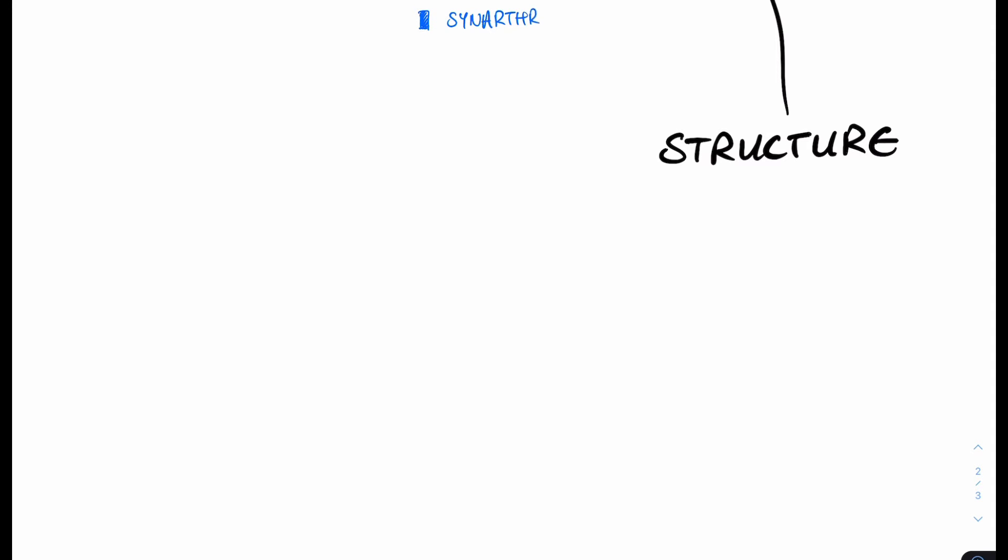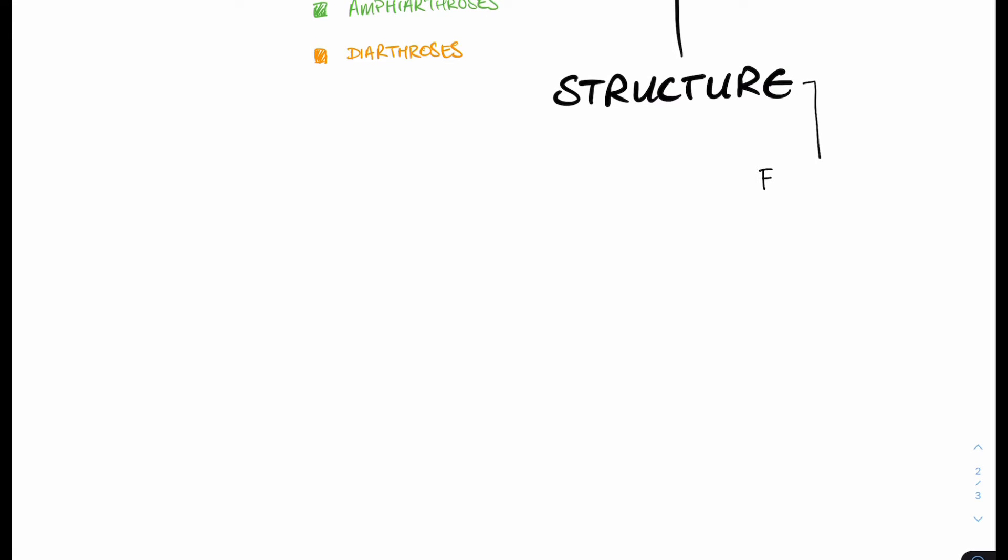The next type of joint classification is based on structure. I'm just going to quickly draw a color key whereby blue means that those joints are synarthrotic, no movement; green, amphiarthrotic, slight movement; and orange, diarthrotic for complete movement. There are three main types of structural classification for joints under which there will be subcategories as well. The first type is a fibrous joint and that's made out of thick connective tissue. Under the subheading of fibrous joints, there are going to be three types.